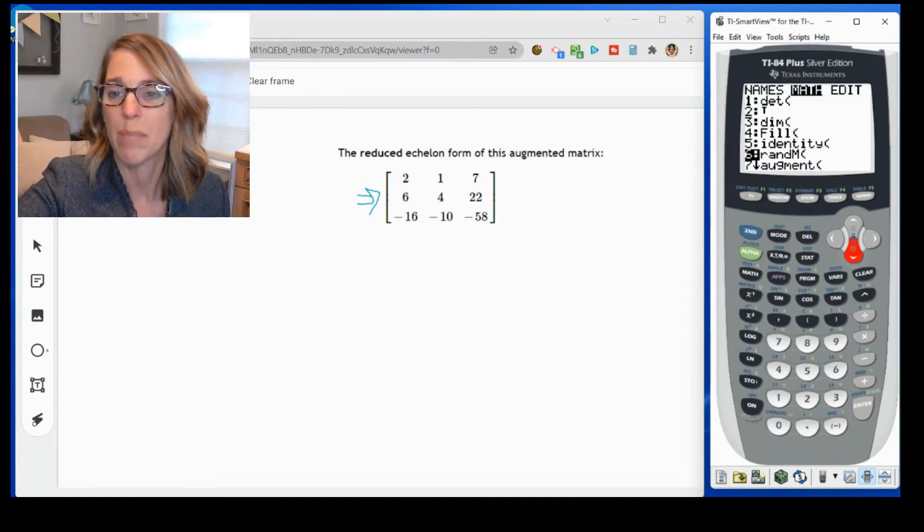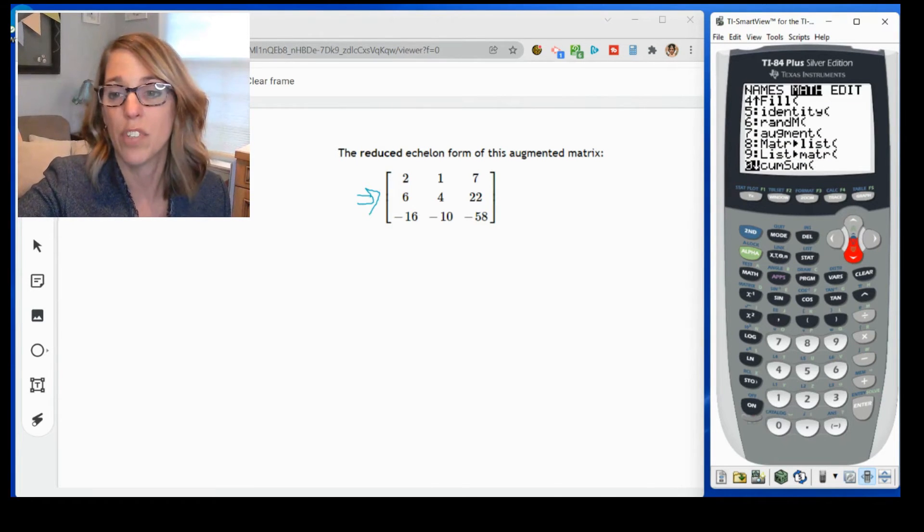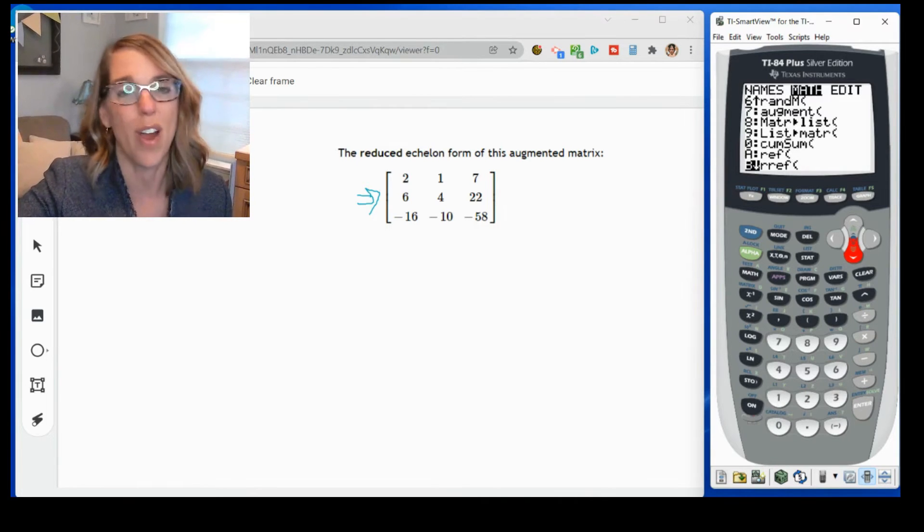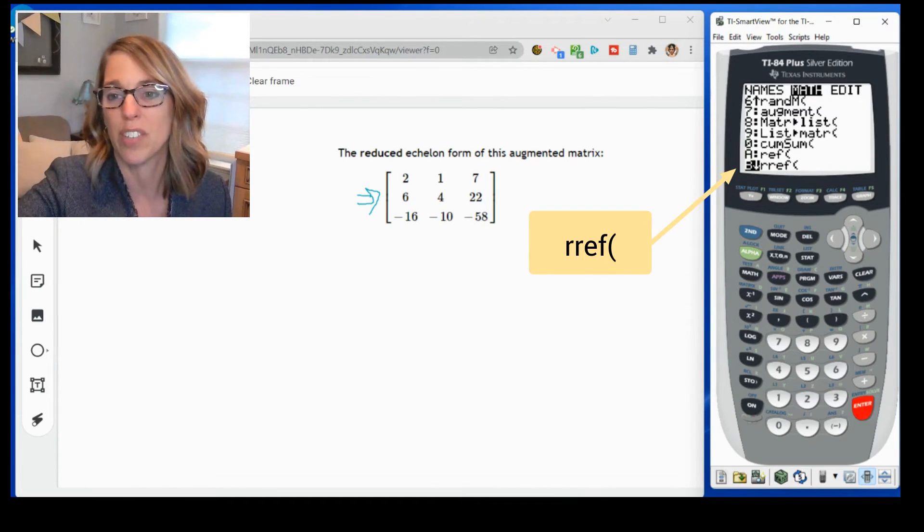So I'm going to go ahead and scroll down, and I'm looking for the RREF. We're going to find REF, which is row echelon form, but we want RREF, which is reduced row echelon form.